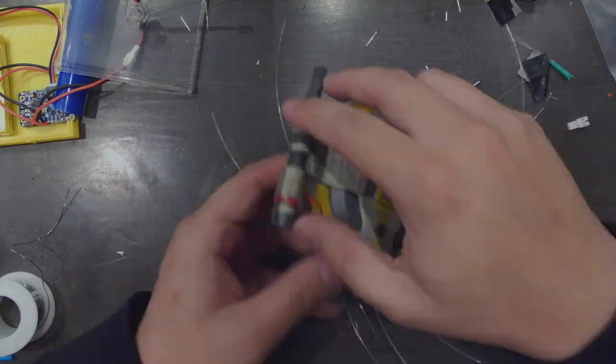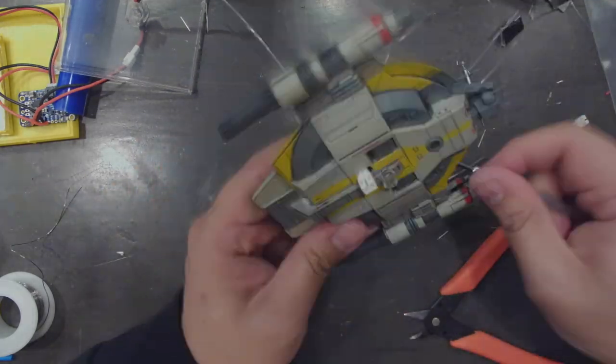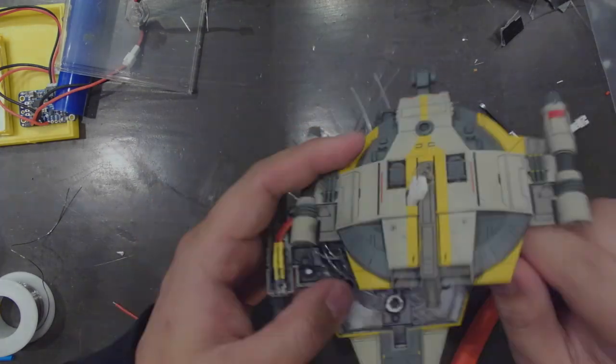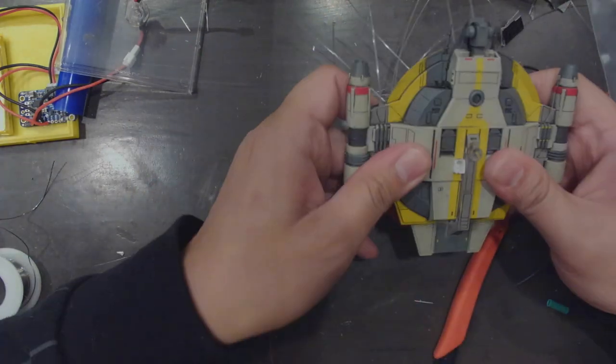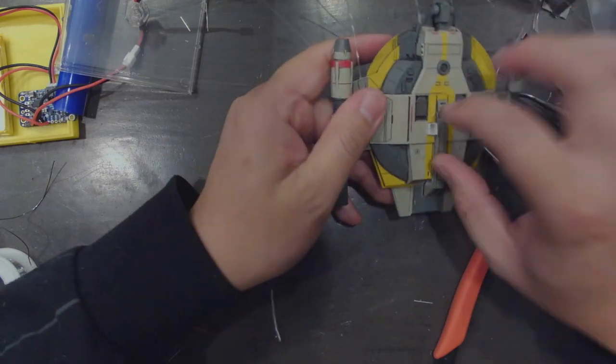Next I'm going to thread the power pigtail through the bottom half of the Lancer body. This rough fitting allows me to make sure that the pigtail fits flush against the ventral ridge and that the entire body does close without it pushing the power pigtail out of place.